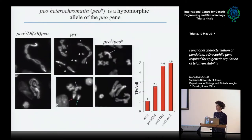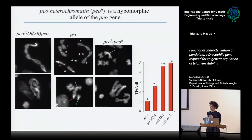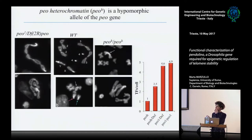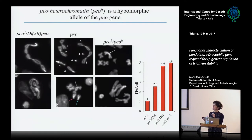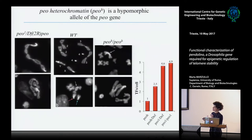Recently we identified a hypomorphic allele of this gene that has only one fusion per cell, which we named peo-H because of its particular phenotype. In this mutant, the telomeres most involved in the fusions are those with a heterochromatic portion that appear brighter after DAPI staining because heterochromatin is more condensed. These are the fourth chromosomes, the Y chromosome, and the right arm of the X chromosome. Here you can see some examples of these fusions: an XR-4 fusion, two XR-4, a dicentric chromosome, and a Y ring formed by the intrachromosomal fusion of the Y chromosome.